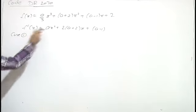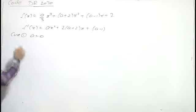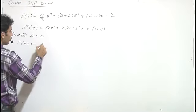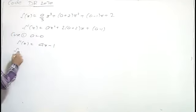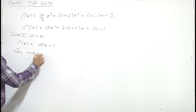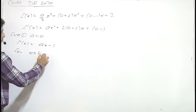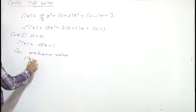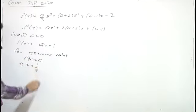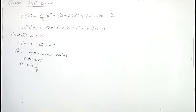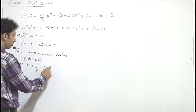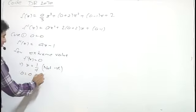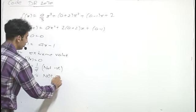Case 1: if the leading coefficient is equal to 0, i.e., a = 0, then f'(x) = 4x - 1. For extreme values, equating f'(x) = 0 gives x = 1/4. But we need a negative point of minima, and 1/4 is not negative, so we reject this case. Therefore, a = 0 is not an answer.